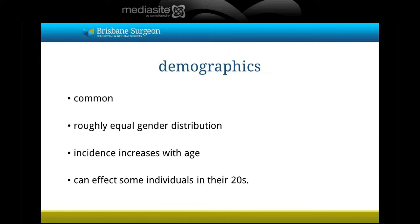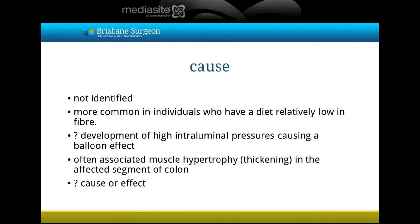Diverticular disease is a common condition, with a significant proportion of the population affected. The majority of patients don't realize they have it, and it is often picked up at colonoscopy when investigating other conditions such as bowel cancer. It affects roughly equal numbers of men and women, and incidence increases with age, though it can affect individuals in their 20s. The cause has not been identified, but it is more common in those with a low-fibre diet. High pressures within the colon lumen are thought to create a balloon effect, often associated with muscle hypertrophy, though whether this is a cause or effect is unknown.